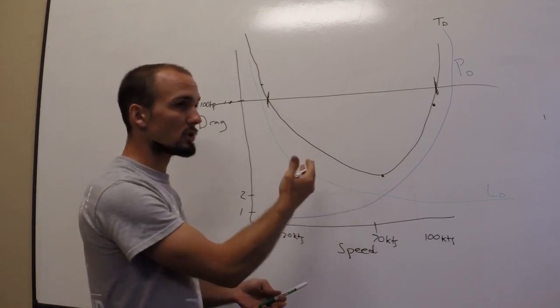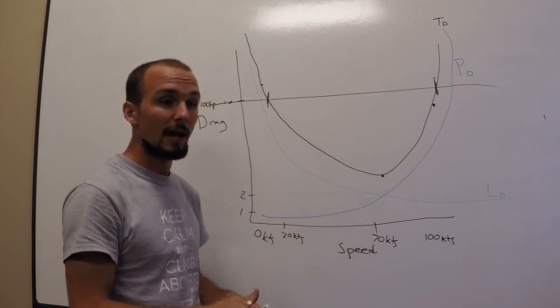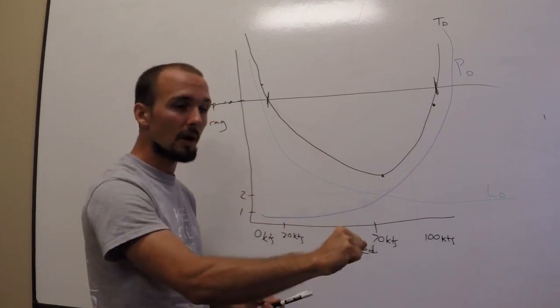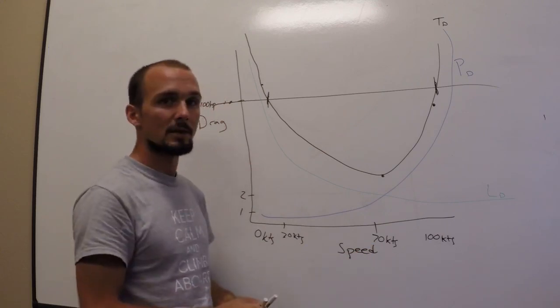And you'll notice this when you get into your short field approaches. You'll have a slower approach speed, more flaps in, maybe 30 or 40 degrees of flaps, and the airplane sinks like a rock because of all this drag. It takes a lot of power. And as soon as you reduce that power, the airplane just falls right down onto the runway.